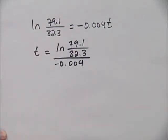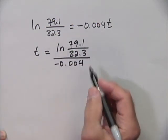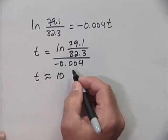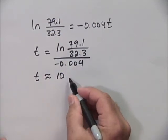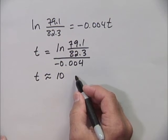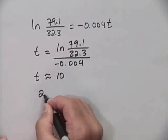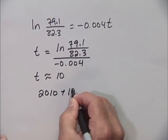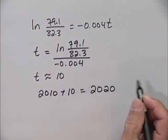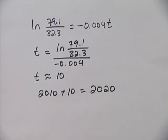Using a calculator to evaluate the right-hand side, we find that t is approximately 10. That refers to 10 years after 2010, which is 2020. The population of Germany will be 79.1 million in the year 2020.